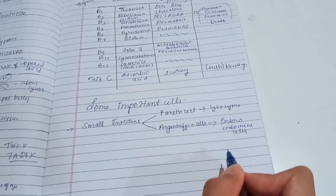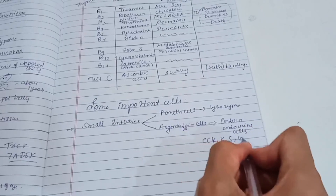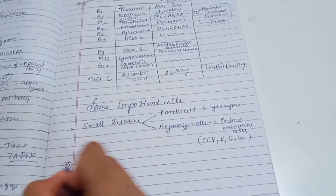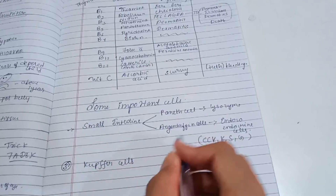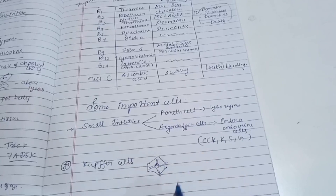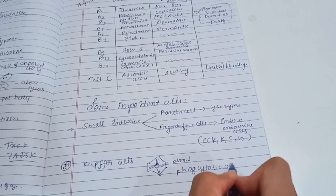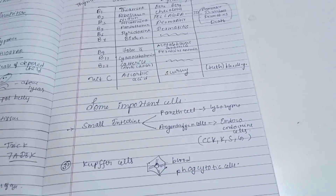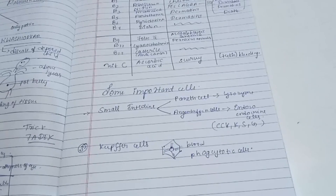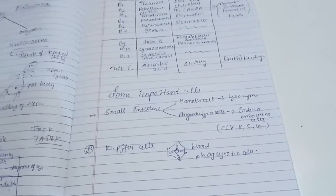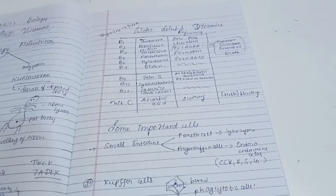Additionally, enteroendocrine cells include CCK cells, K cells, S cells, G cells, and Kupffer cells in the liver, which perform phagocytosis. This is the last topic and last lecture of the digestion and absorption chapter. In the next video, we will study breathing and exchange. If you liked this video, please like, share with NEET aspirants, and subscribe to the channel. Thank you.